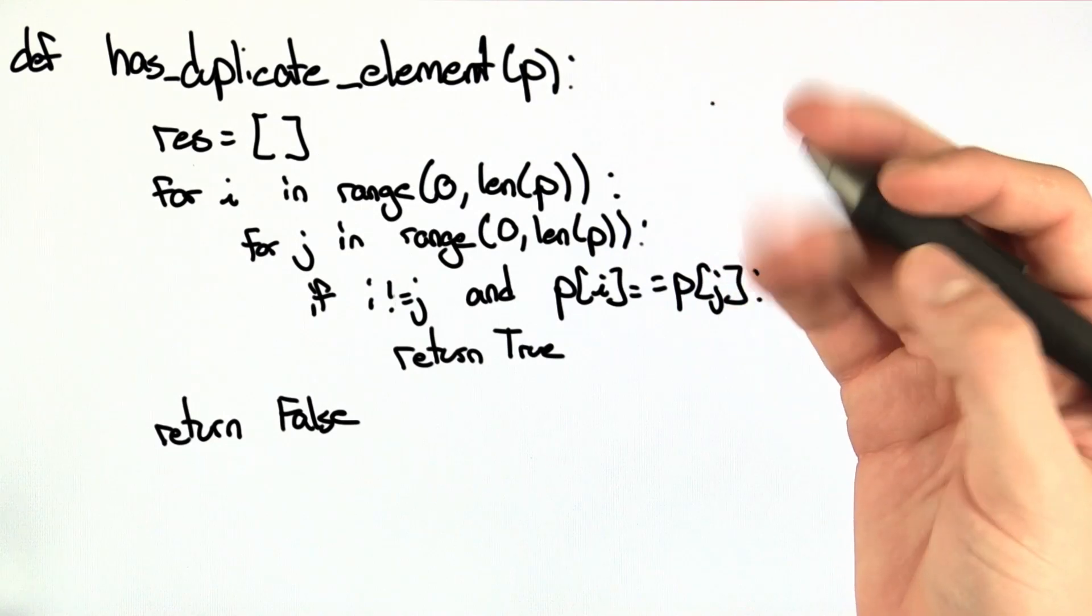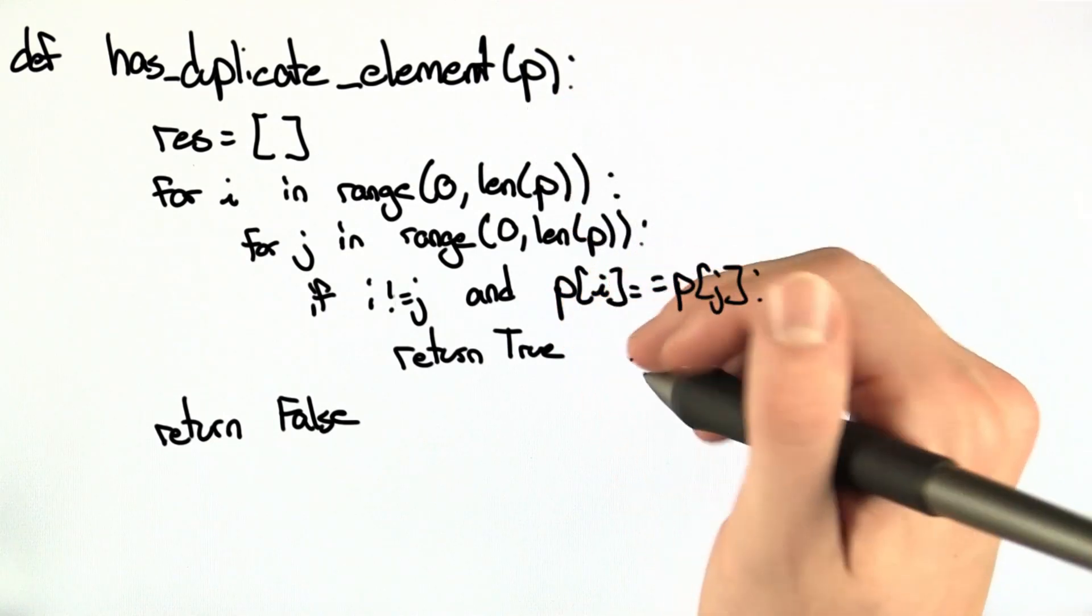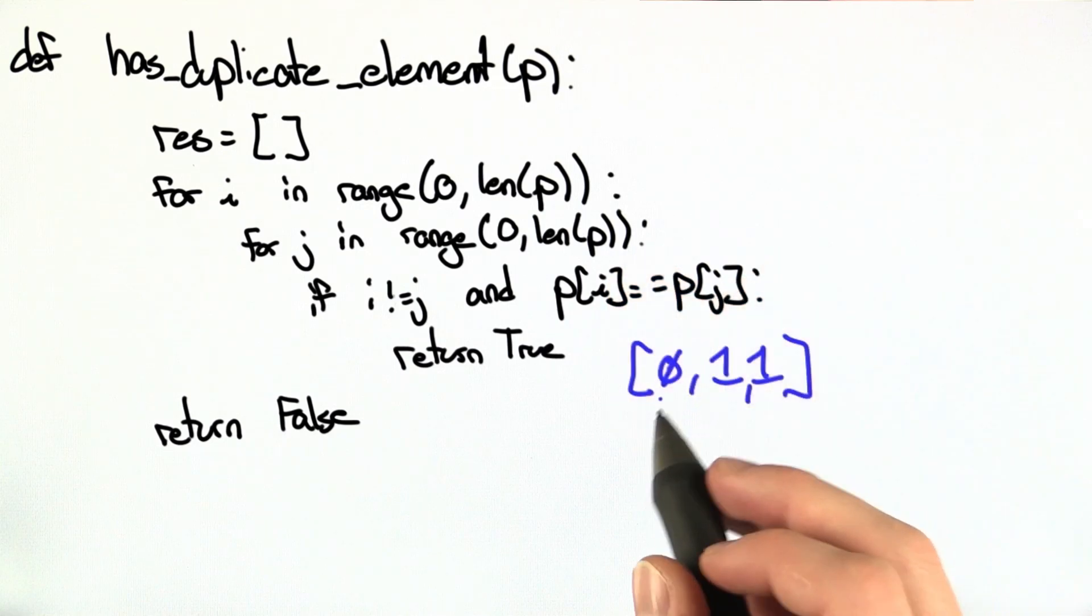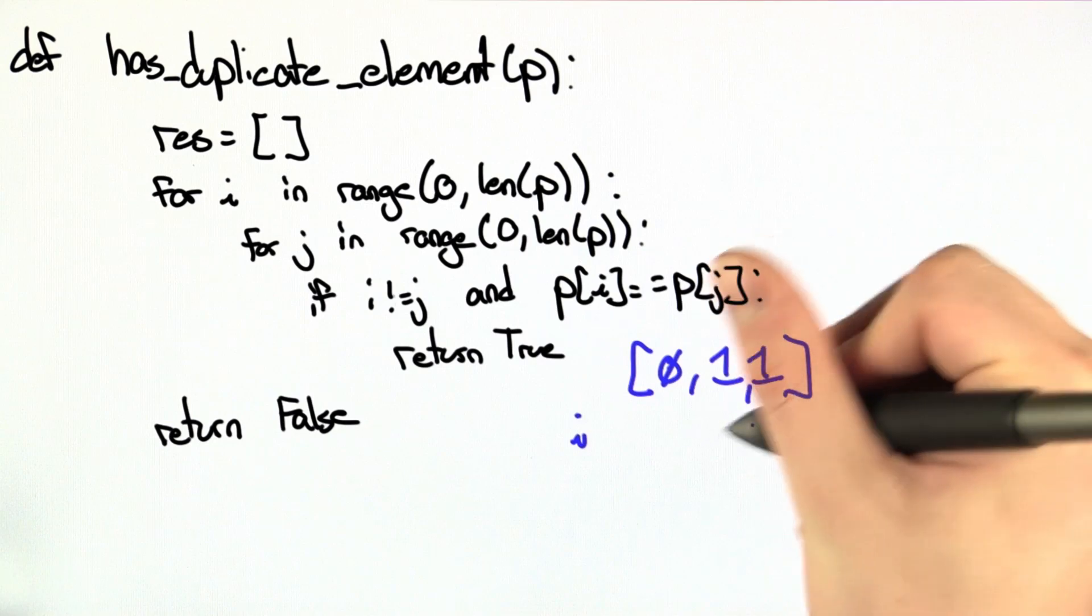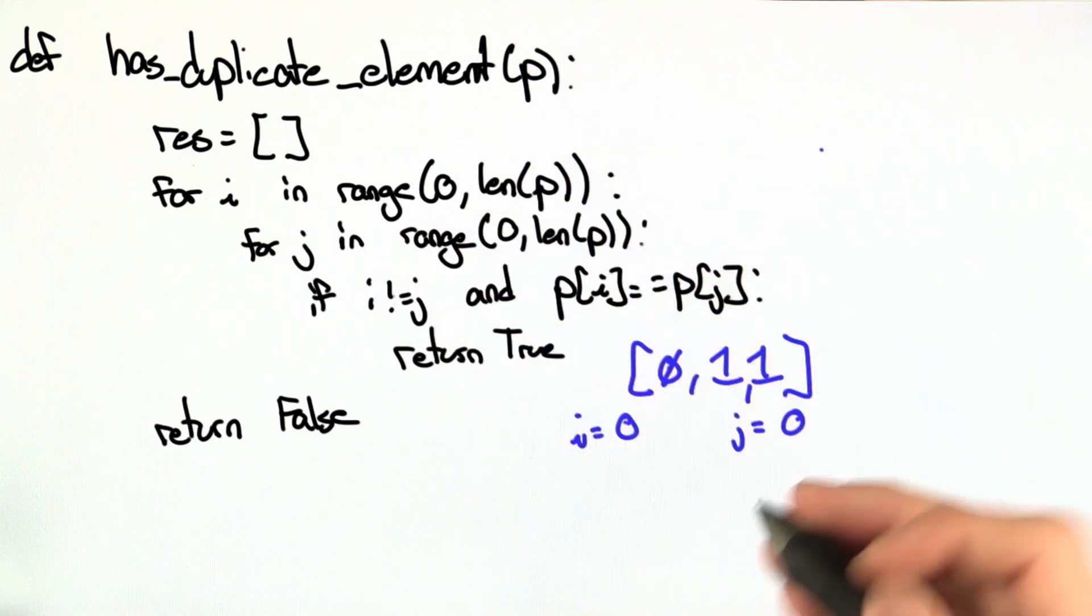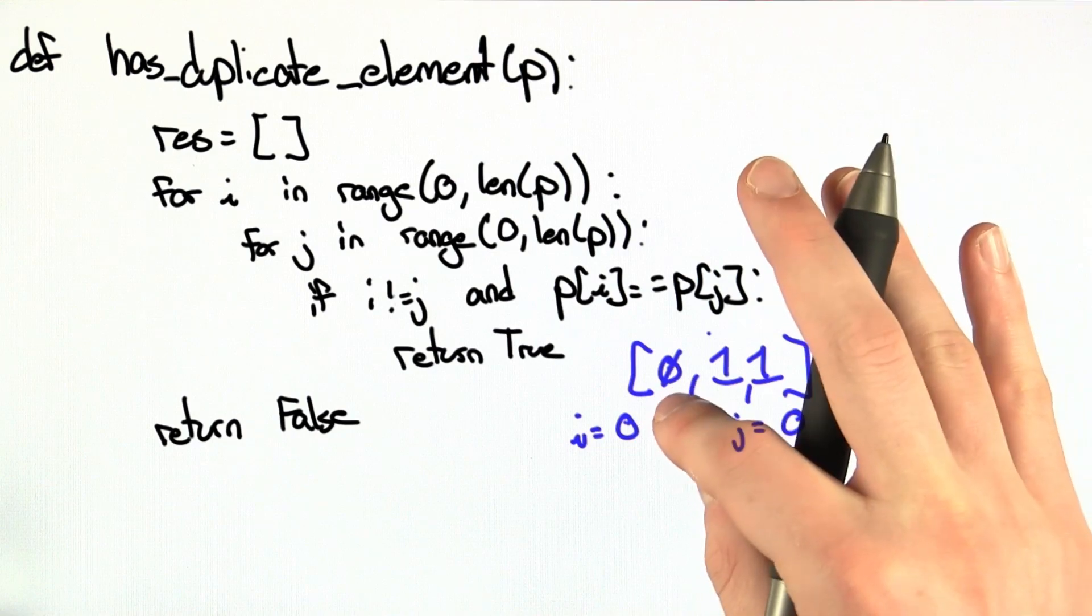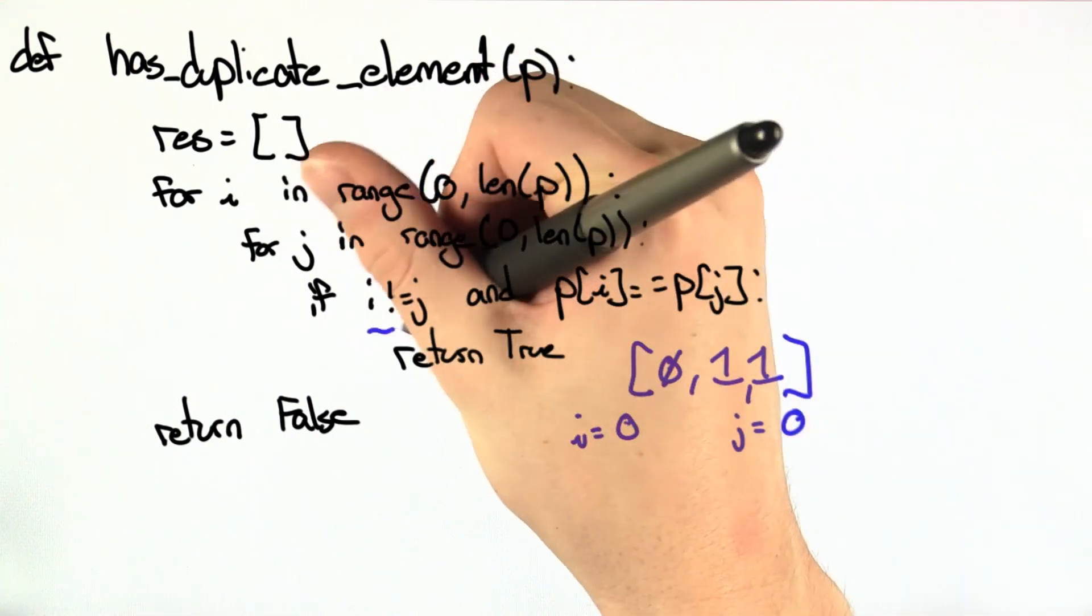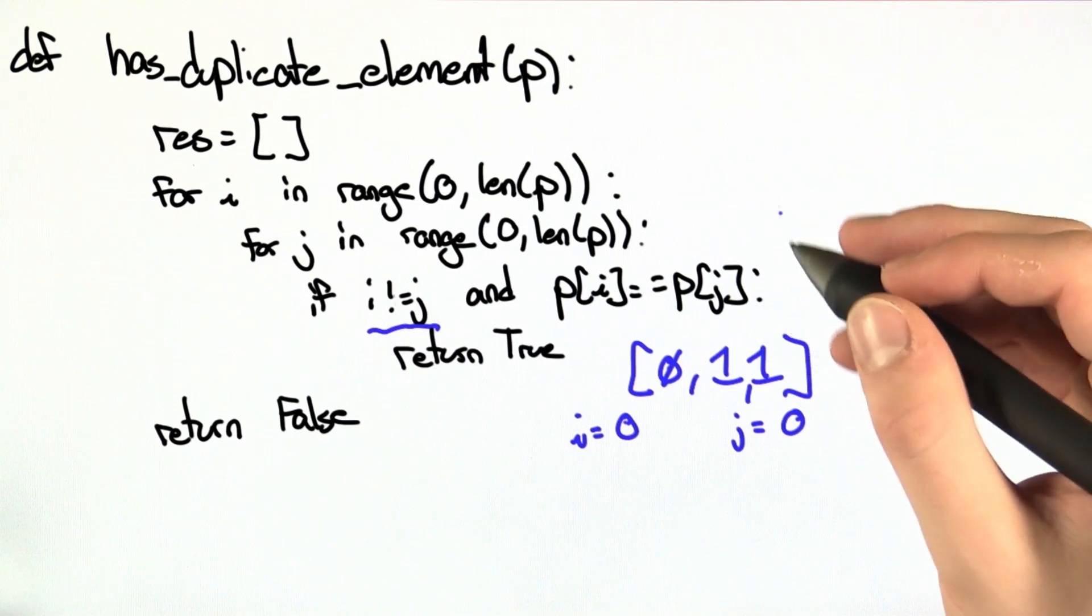This procedure determines whether or not a given list p has duplicate elements. Let's go through a quick example. Here's a small list with the element 0, 1, and 1. Going through the code here, we have i and we have j. In the first iteration of the loops, i and j are both going to be 0. That means we're looking at whether the first element is equivalent to the first element. Well, we have this case right here that says not to compare one element with itself.